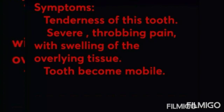Symptoms: the first symptom may be tenderness of the tooth. A severe patient has a history of severe throbbing pain with swelling of the overlying tissue, and the tooth becomes mobile. If left unattended, the infection may progress to chronic apical abscess, wherein the contained pus may break through to form a sinus tract, usually opening in the labial or buccal mucosa. In acute cases, mostly there is no sinus tract present.